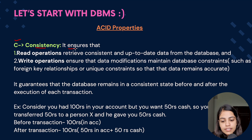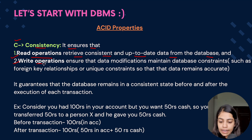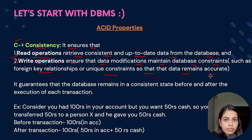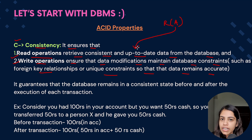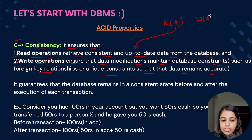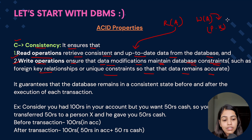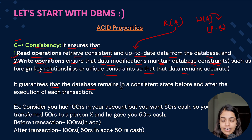Now let's learn about Consistency. Consistency ensures that first, read operations retrieve consistent and up-to-date data from the database, and second, write operations ensure that data modifications maintain database constraints such as foreign key relationships and unique constraints. Whenever we read a value of A, it should show me the last updated value. When writing, if there's a constraint like a primary key, we can't update any duplicate value — these constraints must be maintained.